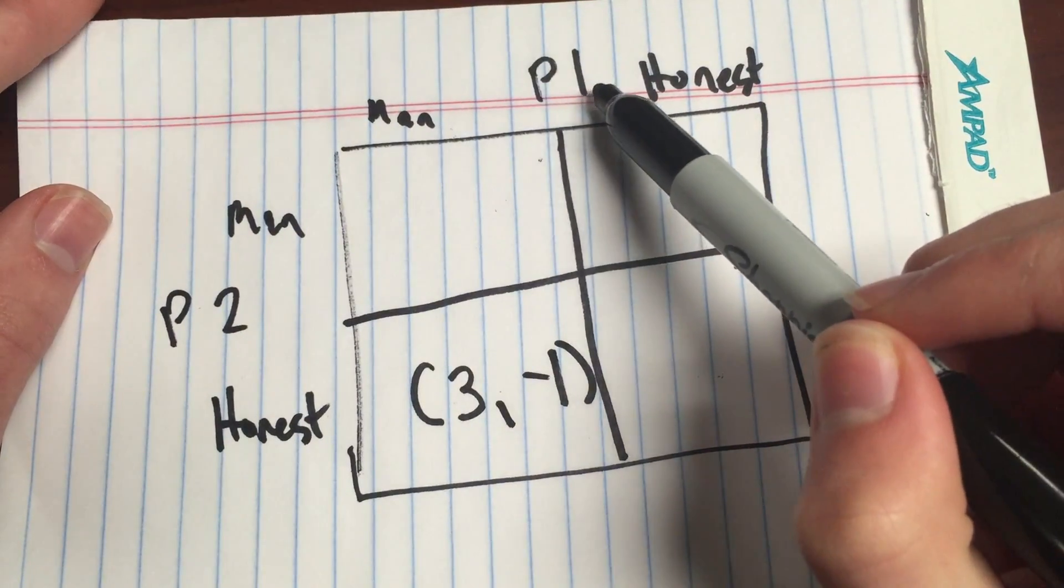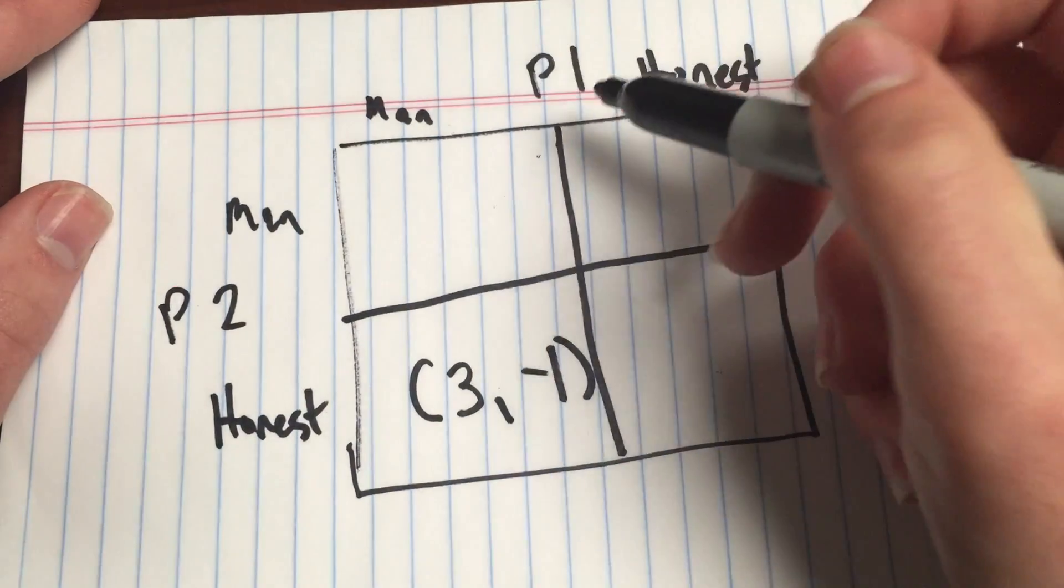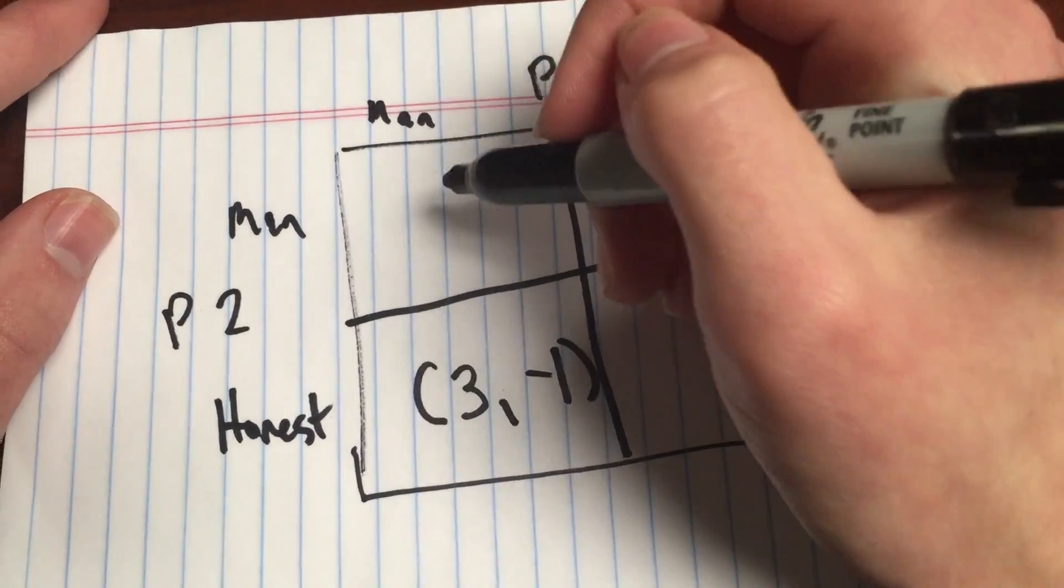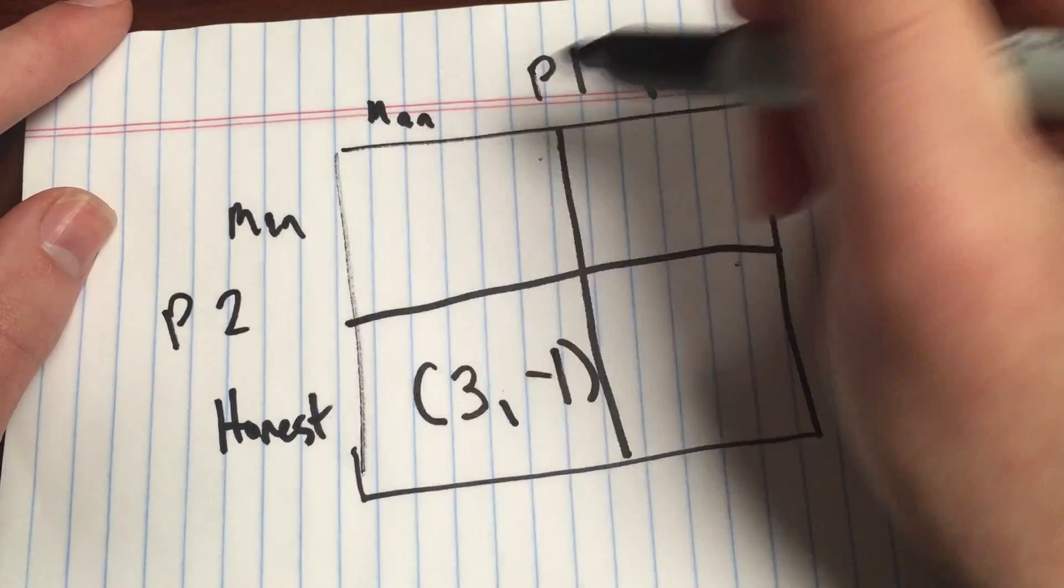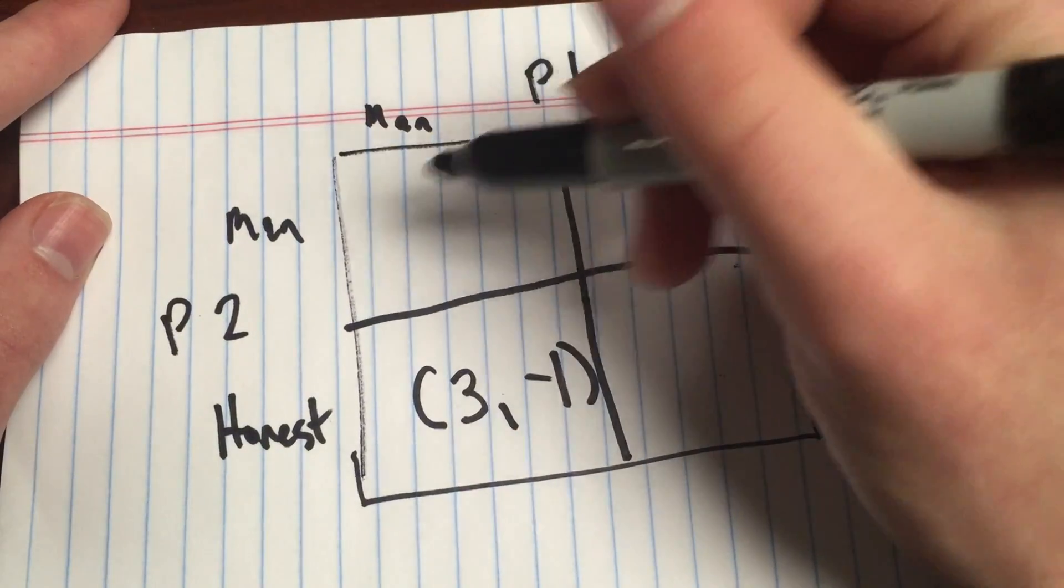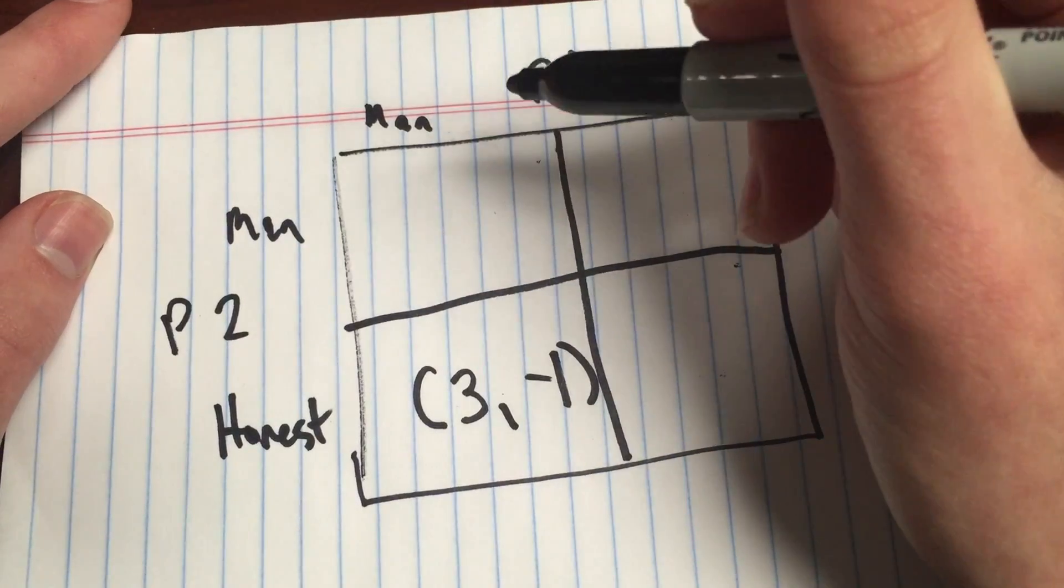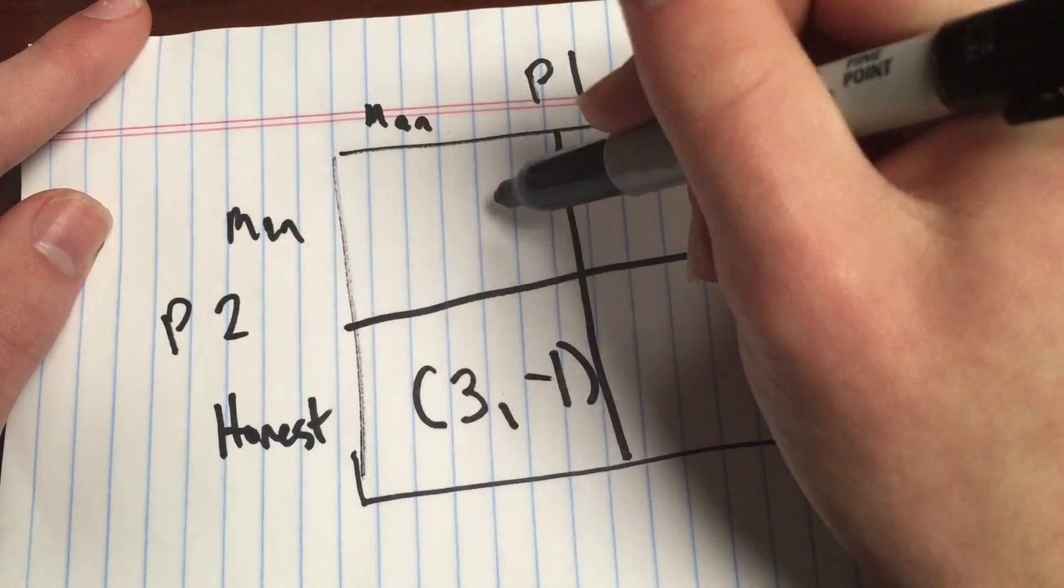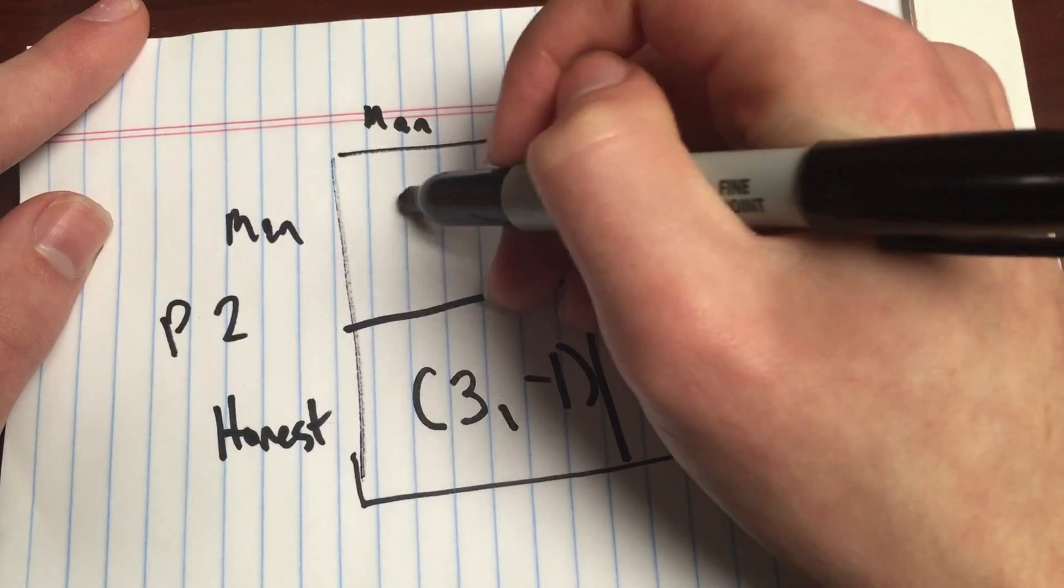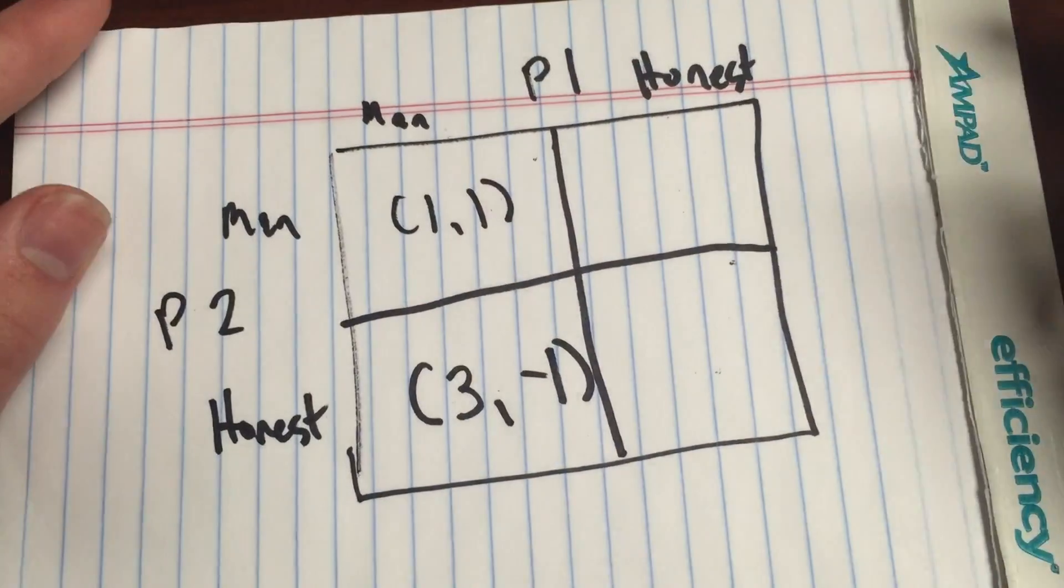Now, if player two knows that player one is going to be manipulative, player two has an incentive to choose manipulate as well. And in that case, neither of them derive the benefits that they would derive if the opposing player was being honest. But it's better for them to choose manipulate rather than be honest in the face of manipulation. So they'll both benefit slightly from the manipulations.